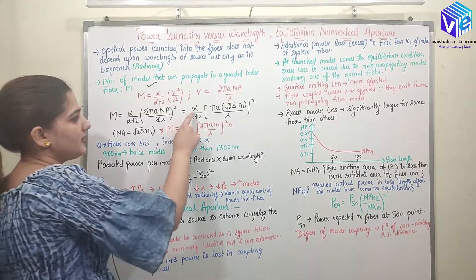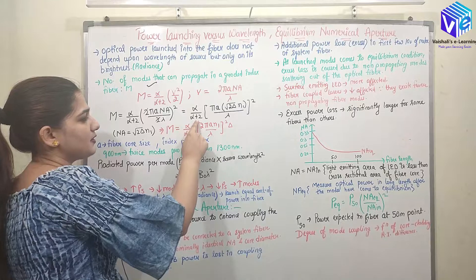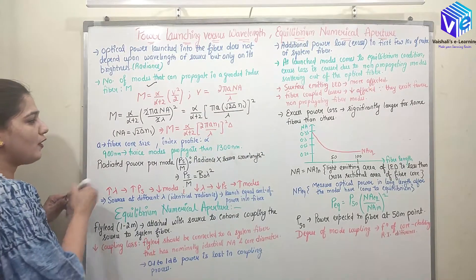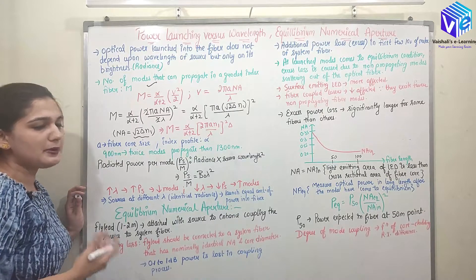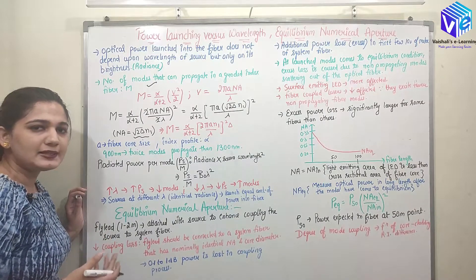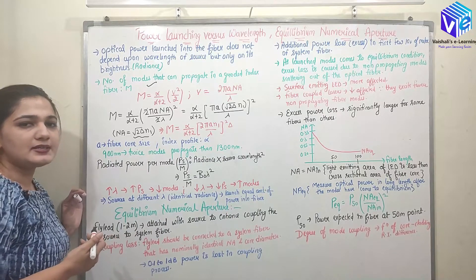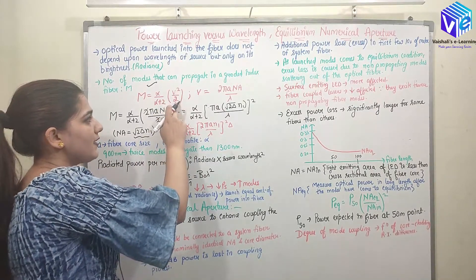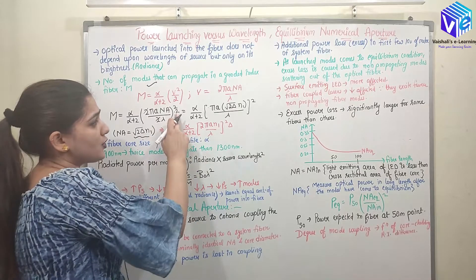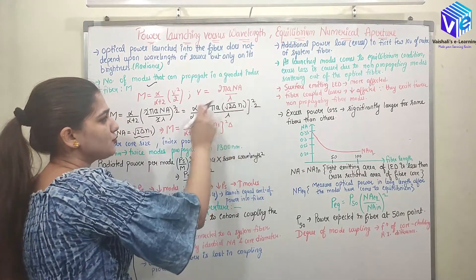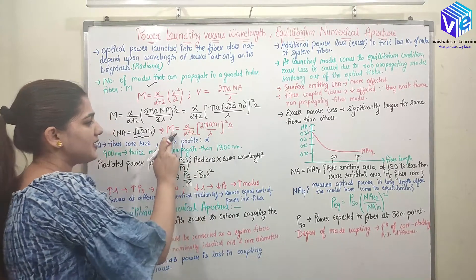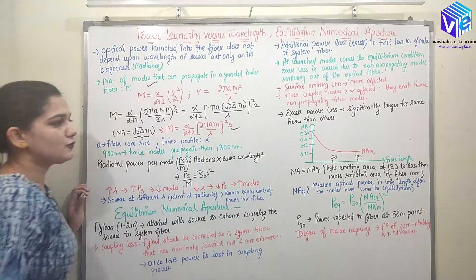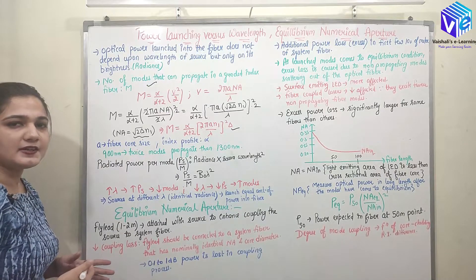In terms of numerical aperture, the number of modes comes out to be (α / (α + 2)) × (πa × NA / λ)². Since numerical aperture equals √(2Δ) × N1, where N1 is the refractive index of the core and Δ is the relative refractive index difference, we can represent M as (α / (α + 2)) × (2πa × N1 / λ)² × Δ.